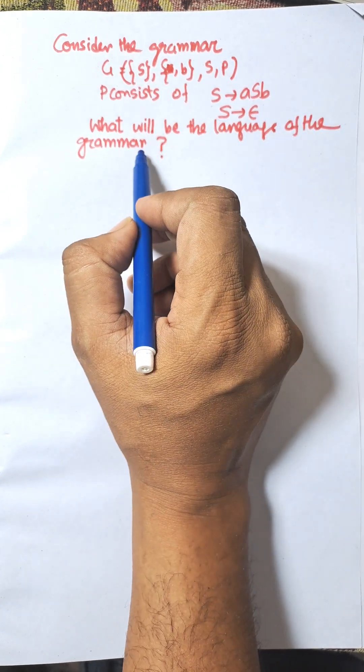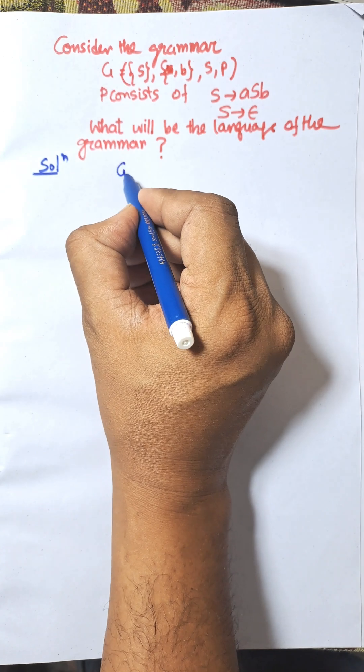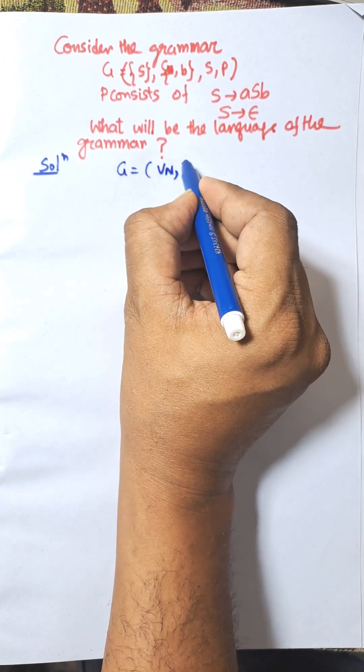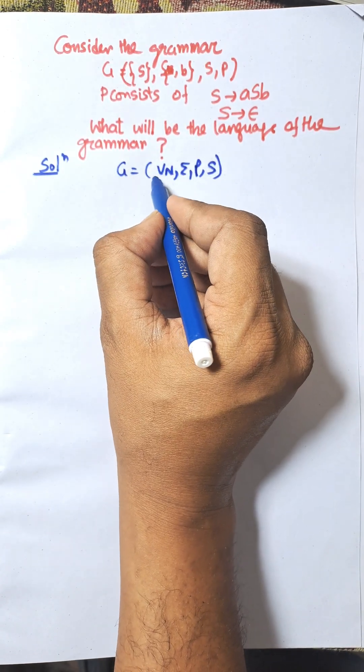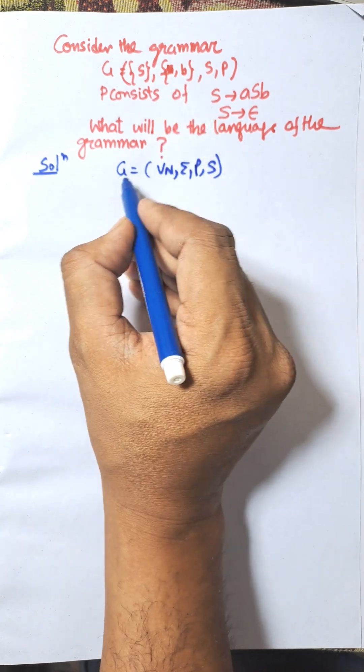What will be the language of the grammar? Solution: We know G equals (VN, Σ, P, S), where VN is the set of variables, Σ is the input alphabet, P is the production rule, and S is the start symbol given.